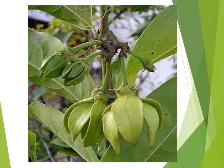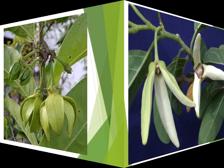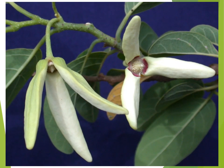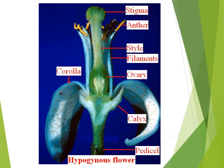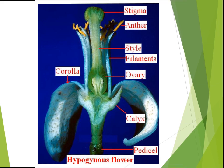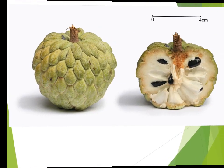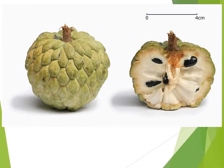These are the arrangement of flowers. The hypogynous flower shows stigma, anther, style, filament, ovary, corolla, calyx, and pedicel. These are the etaerio of berries — sitafal.